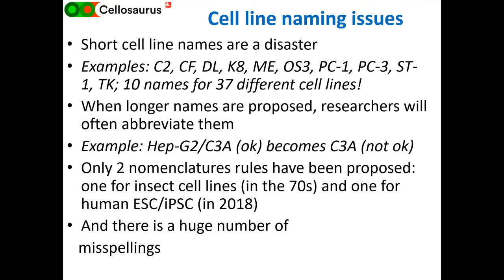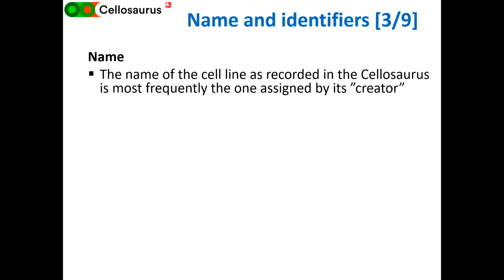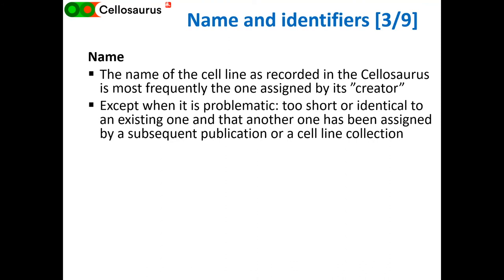Nomenclature rules have been proposed twice: once for insect cell lines in the 1970s (not widely followed) and once for pluripotent stem cell lines in 2018 (starting to be followed). Otherwise, people do what they want. In Cellosaurus, we capture the name assigned by the creator or first published, and if it's too short, we try to use a longer synonym as the recommended name. Casing is important — two cell lines with names differing only in case are considered different names.